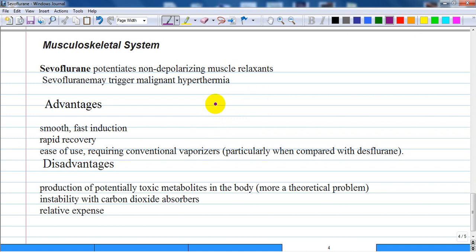How about advantages and disadvantages? In summary, sevoflurane is the newer inhalational anesthetic agent which offers many advantages over other volatile agents.